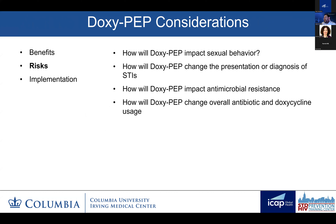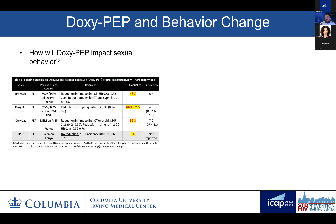So we know about the benefits and we know that doxypep can reduce STIs in the right population. But what are the risks? How will doxypep impact sexual behavior? How will doxypep change the presentation or diagnosis of STIs? How will doxypep impact antimicrobial resistance? And how will doxypep change overall antibiotic and doxycycline usage? The first issue is risk compensation. We're not concerned about people having more sex—we aim to be sex positive. However, one way doxypep differs from HIV PrEP is that HIV PrEP is nearly 100% effective, while doxypep is less so, particularly for gonorrhea. So there is potential for risk compensation to ultimately result in more STIs, negating the benefits of doxypep. However, that's not what we saw in the clinical trials—in both the doxypep and doxyvac studies, doxypep did not appreciably change sexual behavior.